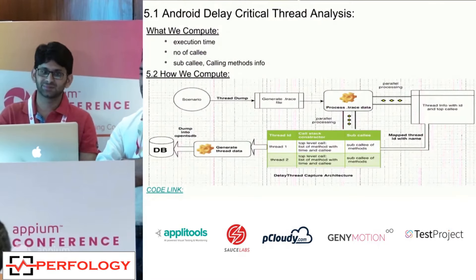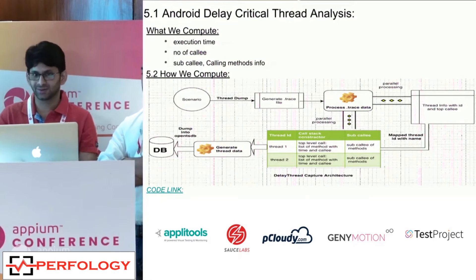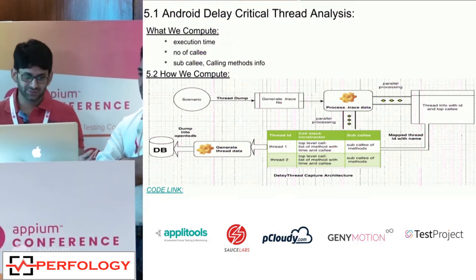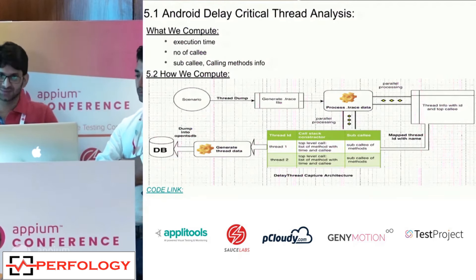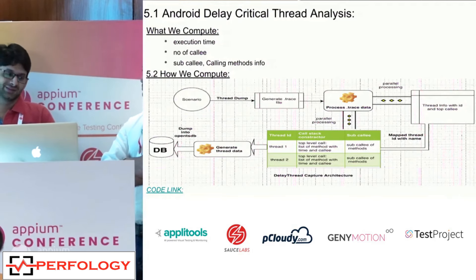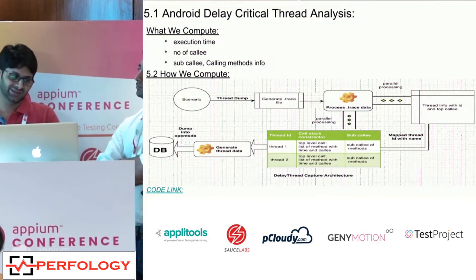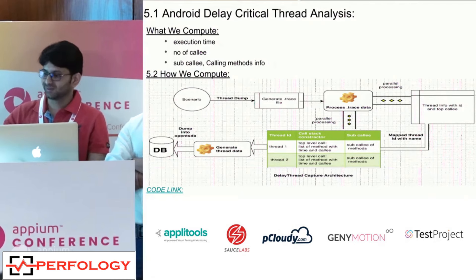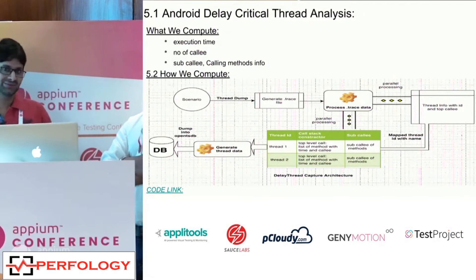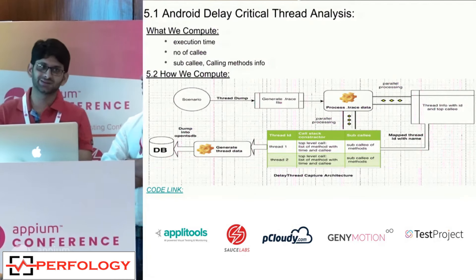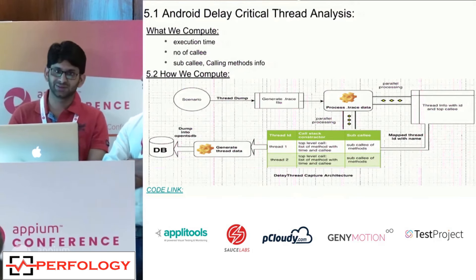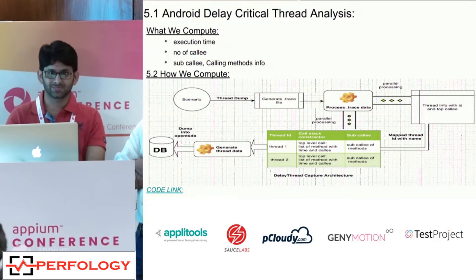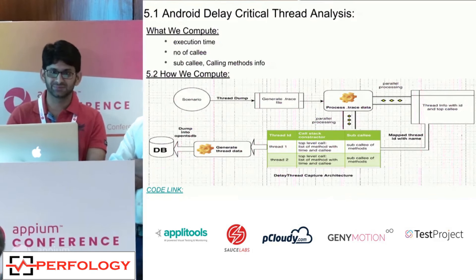For thread analysis, we capture Android method traces. Method tracing is essentially a profiler — you can get it via Android Profiler in Android Studio using the method trace option, start and stop it, and a trace file is generated that can be read in a human-readable format. We've automated this solution for method trace file generation and thread dumping.